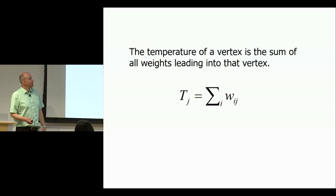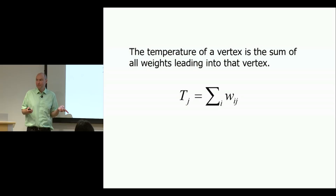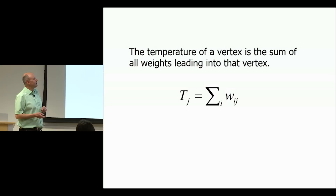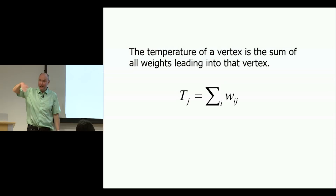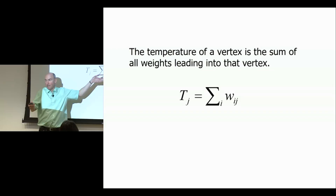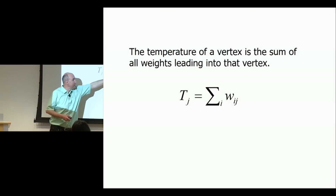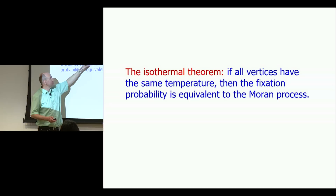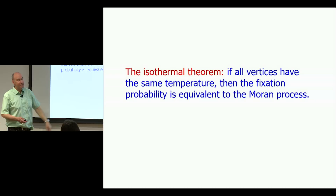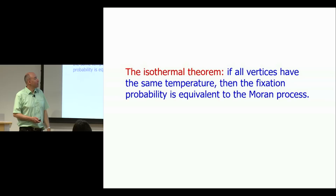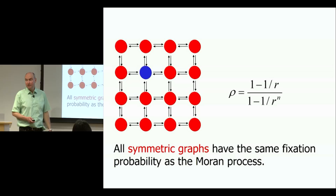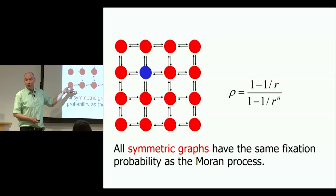We want to find a characterization of all population structures that behave like the complete graph. We define the temperature of a vertex as the sum of all weights leading into that vertex. The isothermal theorem states: if all vertices have the same temperature, then the fixation probability is equivalent to the Moran process. This allows us to construct many population structures with the same fixation probability as the Moran process. A consequence is that all symmetric graphs like regular grids have the same fixation probability as the Moran process. Before our work, many papers in population genetics observed the fixation probability didn't change, but they all looked at isothermal examples.